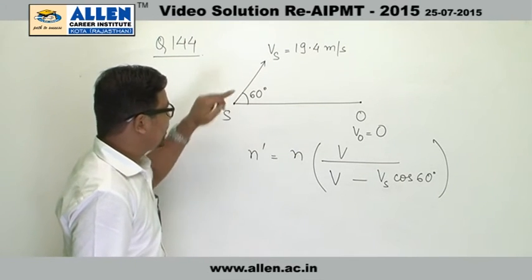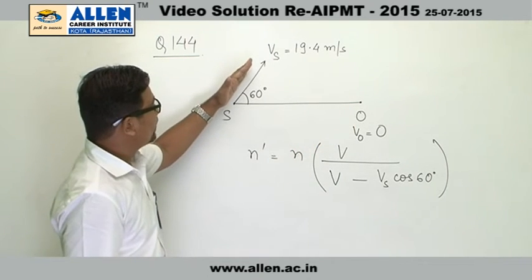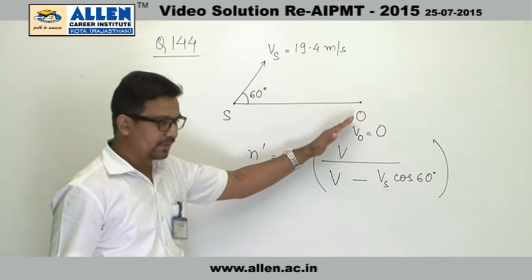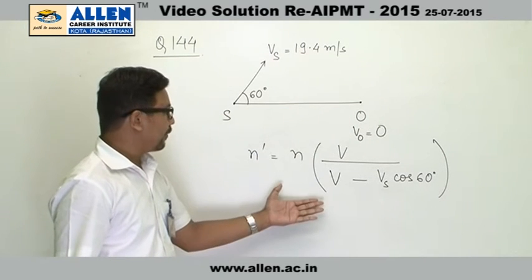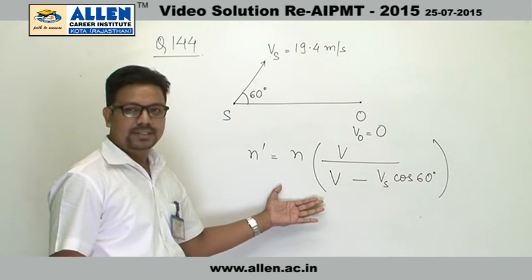making an angle of 60 degrees with the line joining the source and the observer. So we need to take the component of the speed along the Doppler line or the line joining the source and the observer. So the formula will be n' equals n·v upon v minus vs cos 60.